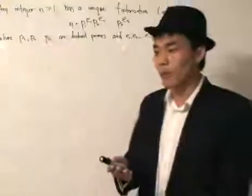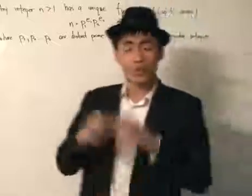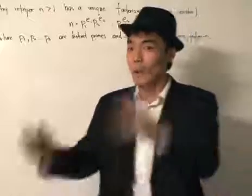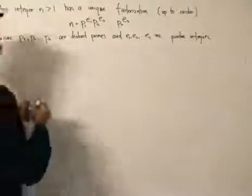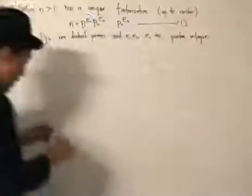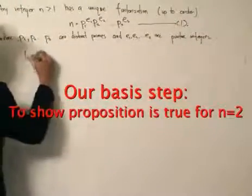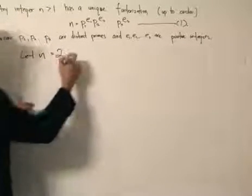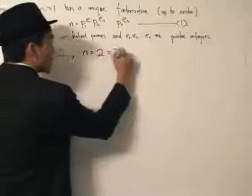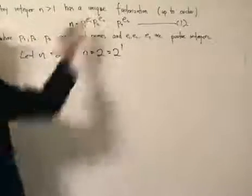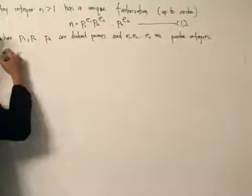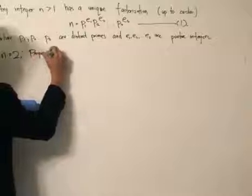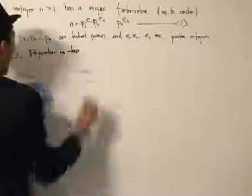For those who are familiar with induction, briefly speaking, it's a two-step process. We show that it's true for a certain case, and then, assuming that it's true for a certain number, we can prove the whole proposition. Let's label this equation number one. For the first step, let n equal 2. If n equals 2, we can simply write n equals 2, which equals 2 to the power of 1. It follows the factorization, so the proposition is true for n equals 2.